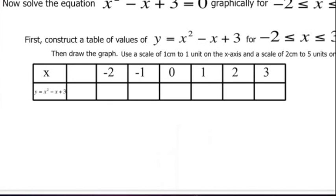Now we're going to solve the equation x squared minus x plus 3 equals 0 graphically, where x is greater than or equal to negative 2 but less than or equal to positive 3. Again, that's giving you a super hint as to where your answers are going to lie. So we're going to input the values into our graph, starting with x equals negative 2.